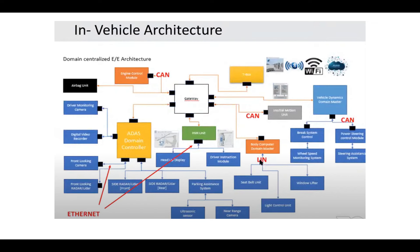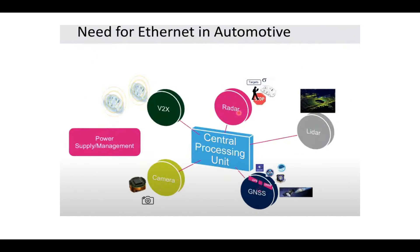Other applications include a central unit connected to radar, cameras, and LiDARs, as well as V2X vehicle-to-vehicle communication and GNSS — our Global Navigation Satellite System — for maps and positioning. When we consider this huge set of applications and data, the processing, transmission, and reception must all happen at higher speed. This is where Ethernet plays a major role.